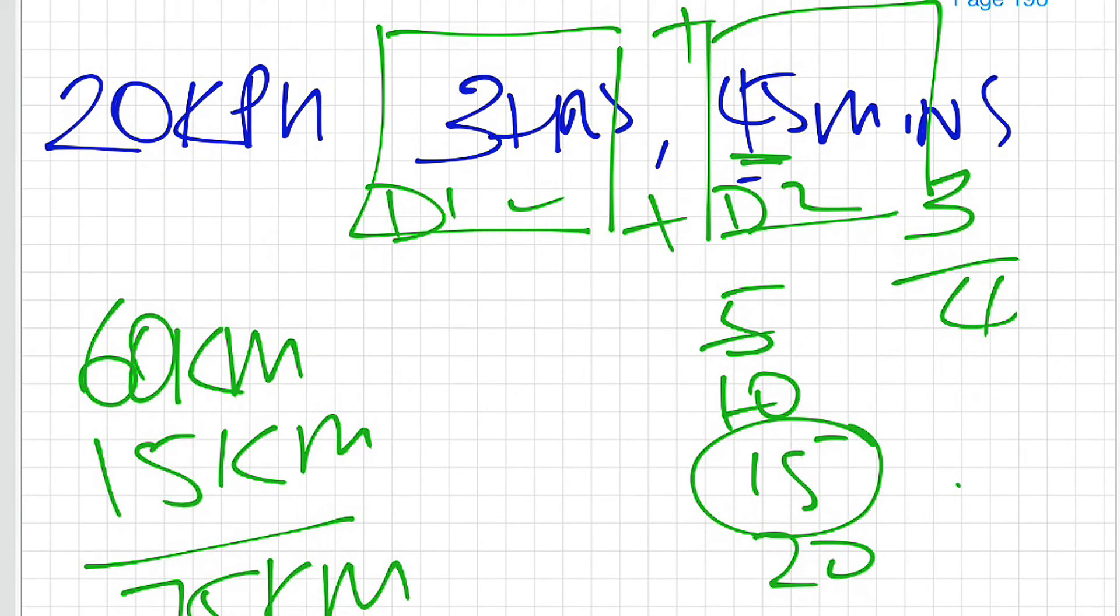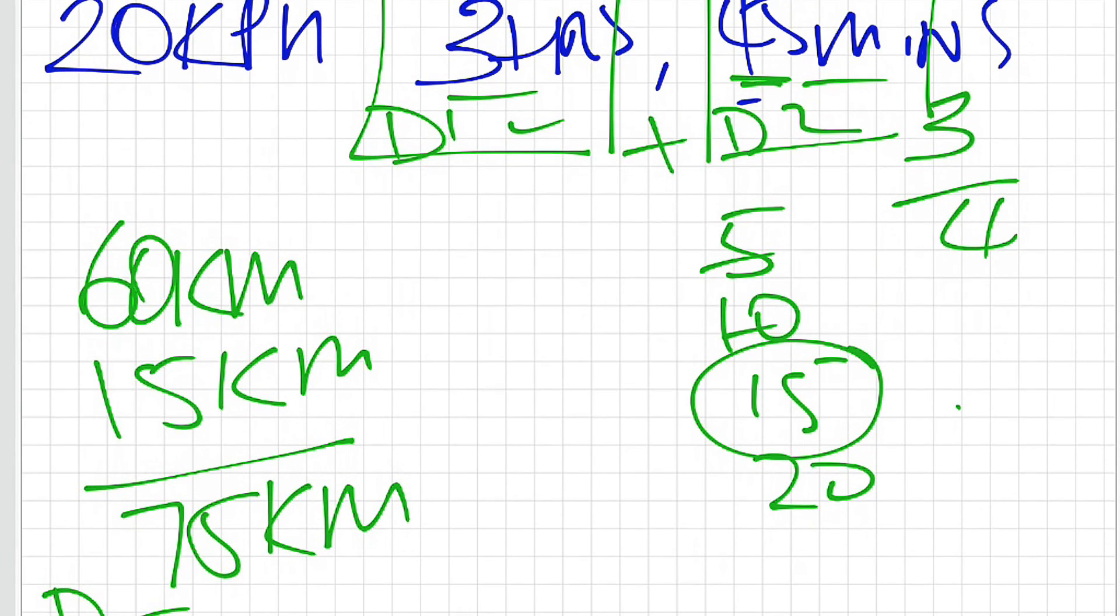We're still using the steps that we went through in the lessons but we're just being a little bit more efficient here, identifying the most efficient way to use the steps based on what information is in these first two boxes. 75 kilometres for question 7.